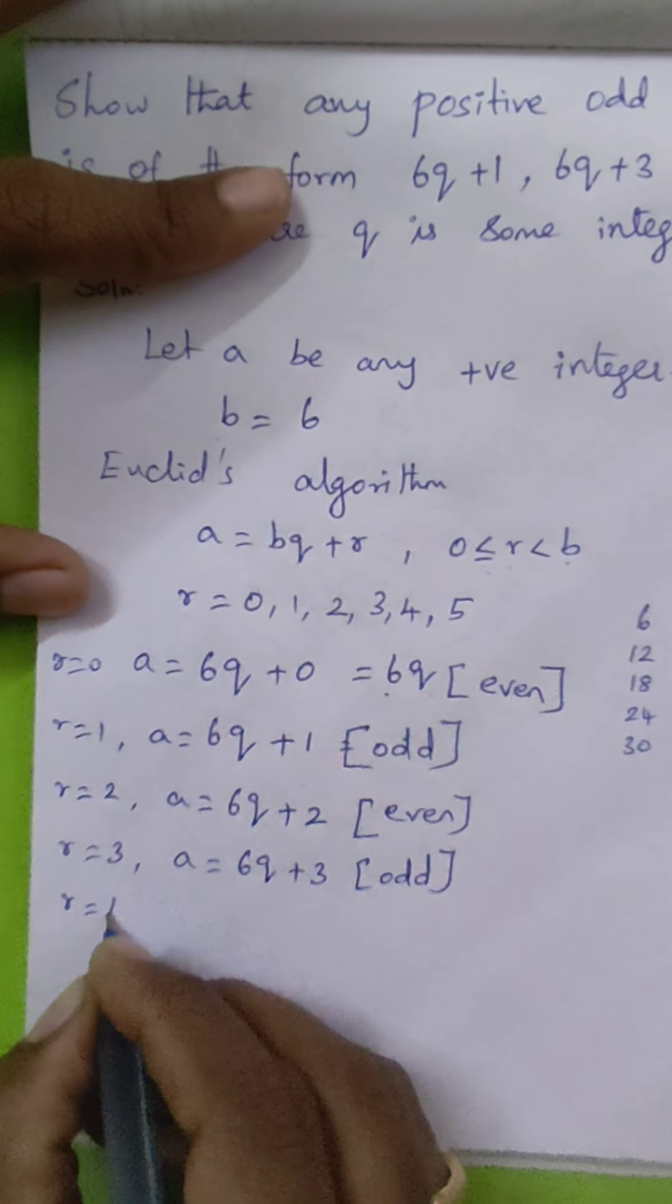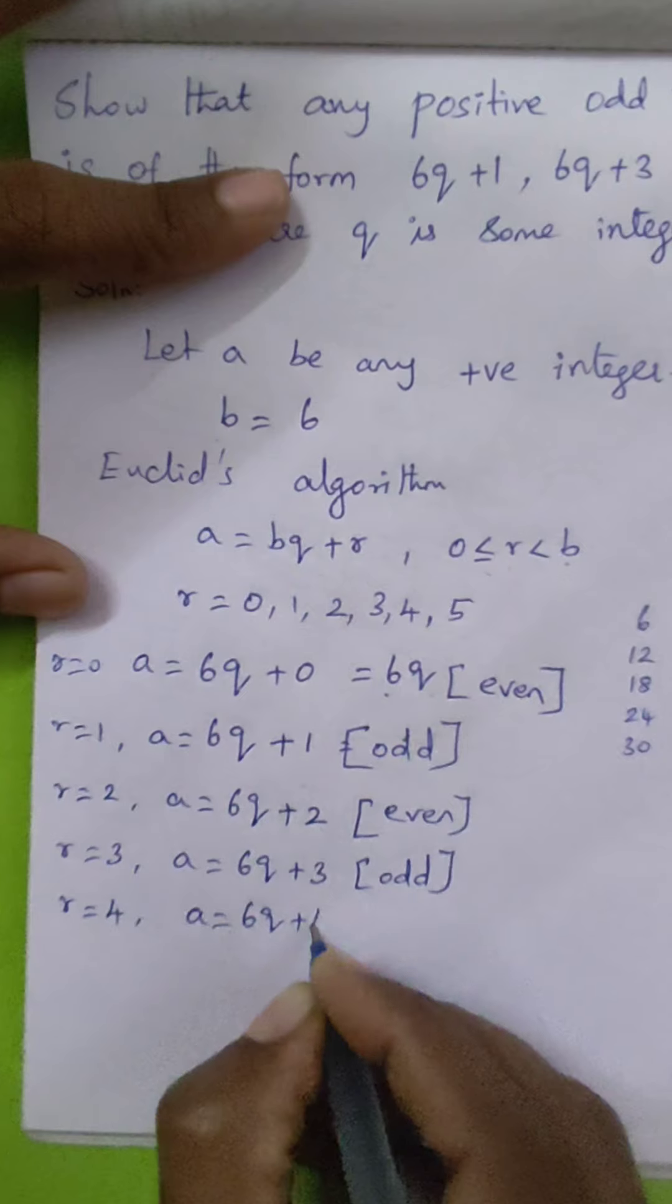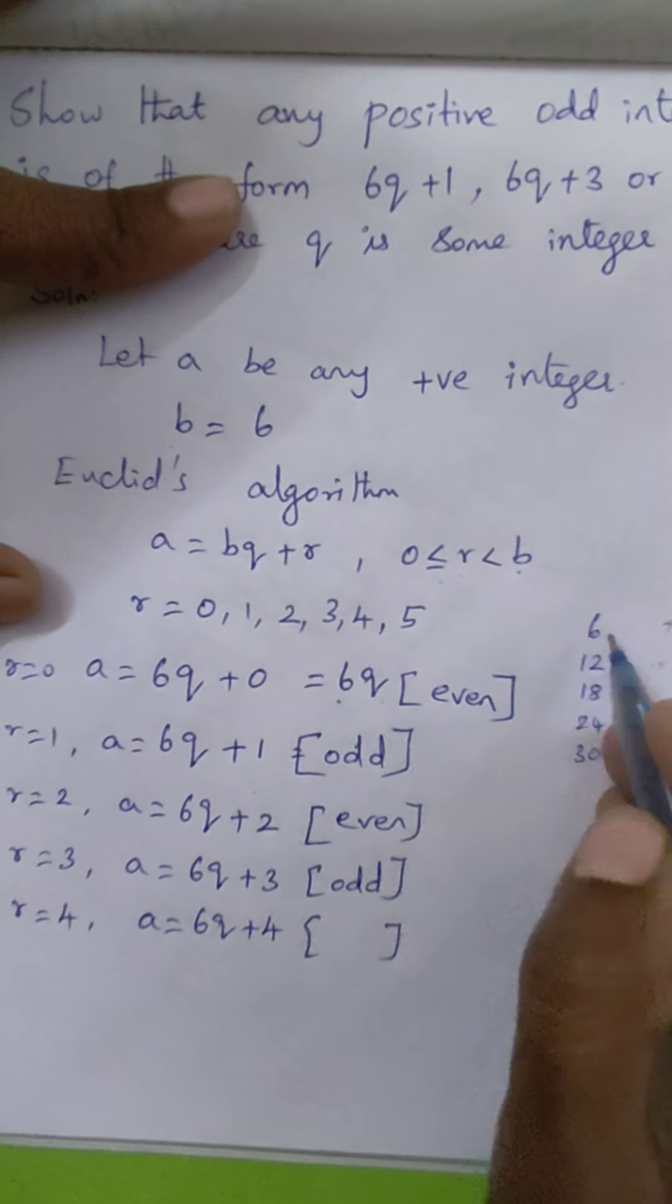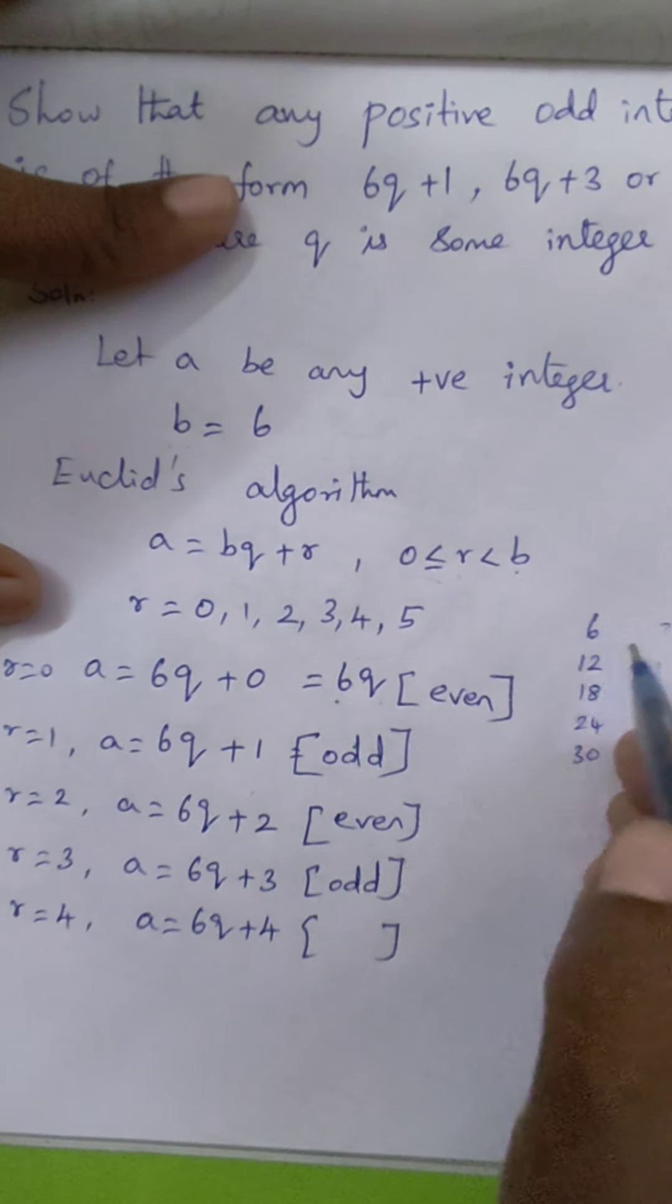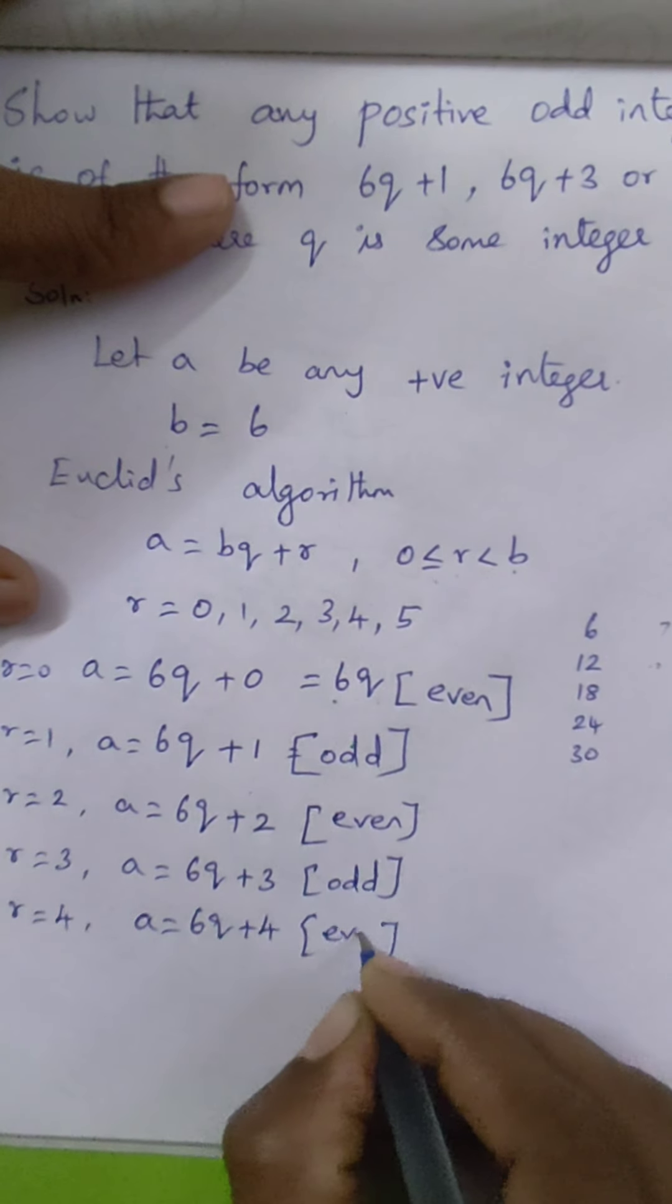Next, when r equals 4, a equals 6q plus 4. Again, 6 plus 4 is 10, 12 plus 4 is 16, so all those values are even.